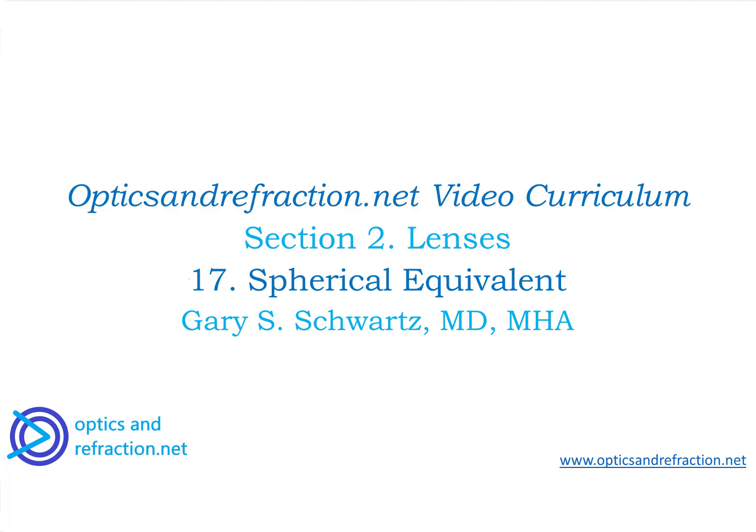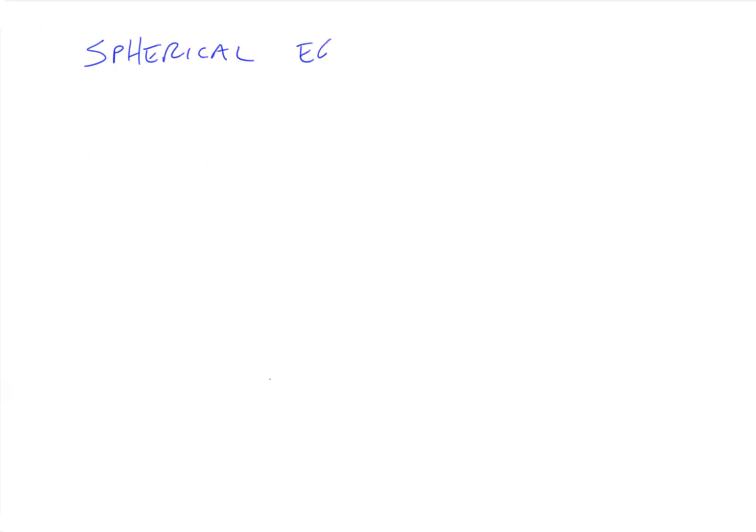In this talk we're going to go over the concept of spherical equivalent. What spherical equivalent basically means is if I have a non-spherical system like cylinder or toric, but I don't have cylindrical or toric lenses — I only have spherical lenses — which spherical lens is most equivalent to that? And it kind of works out to the average.